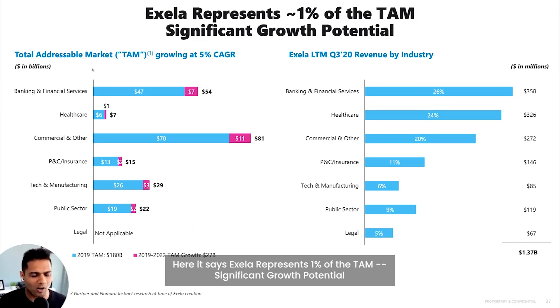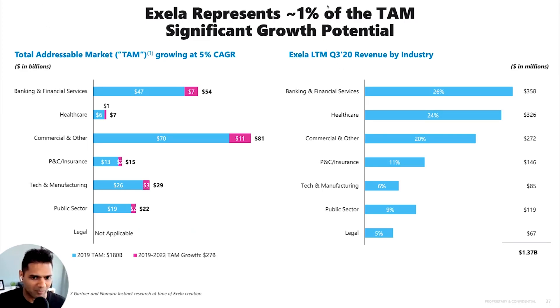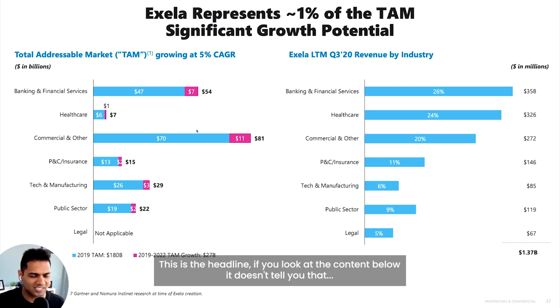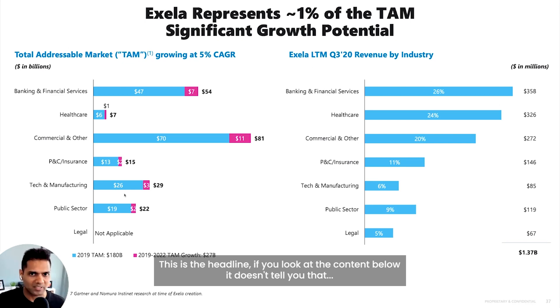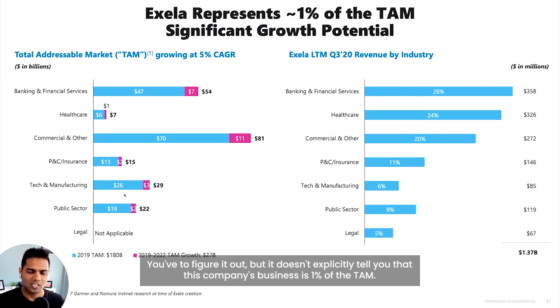It says, Accela represents 1% of the TAM, significant growth potential. This is the headline. If you look at the content below, it doesn't tell you that.